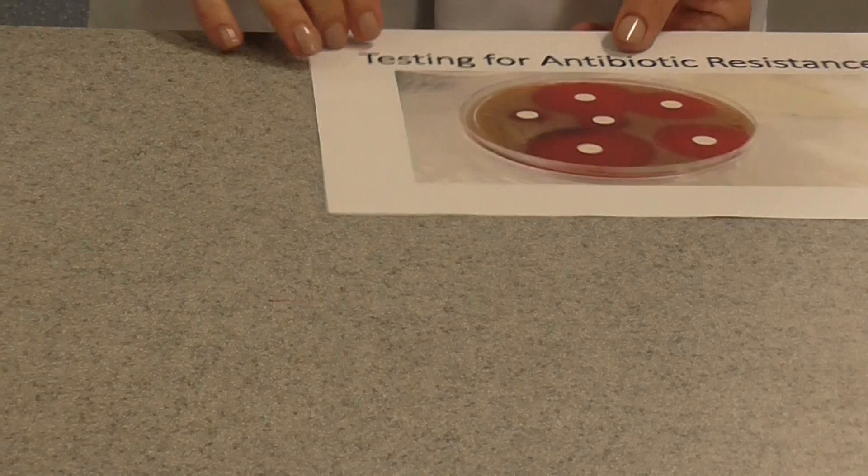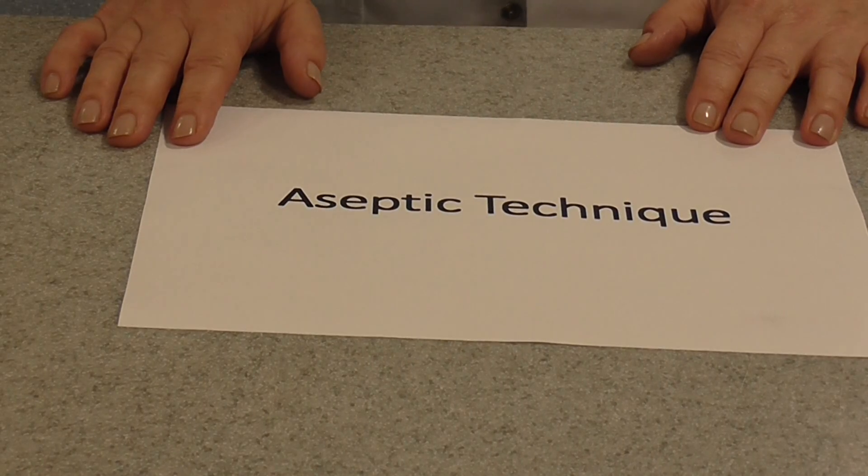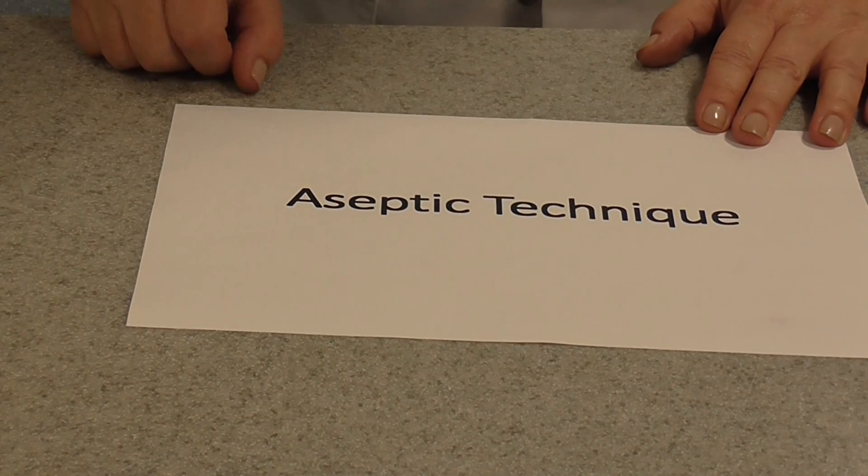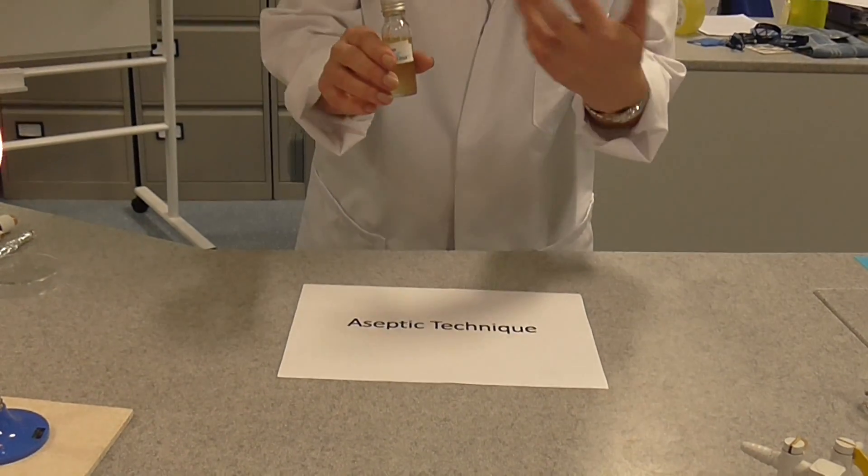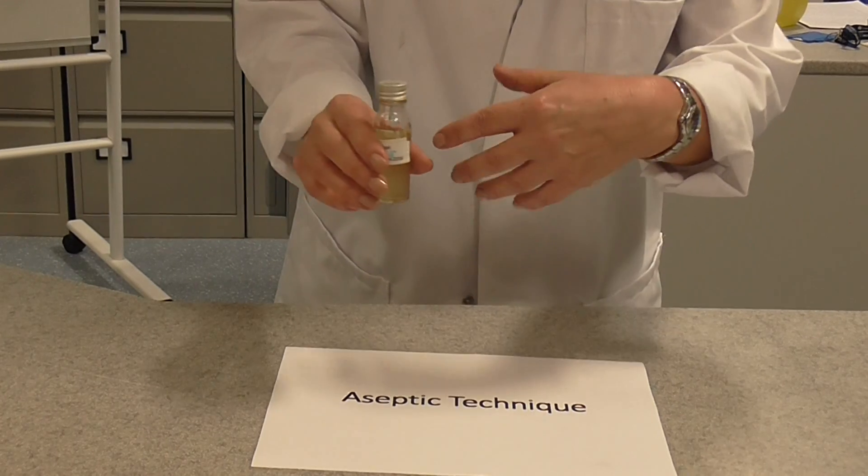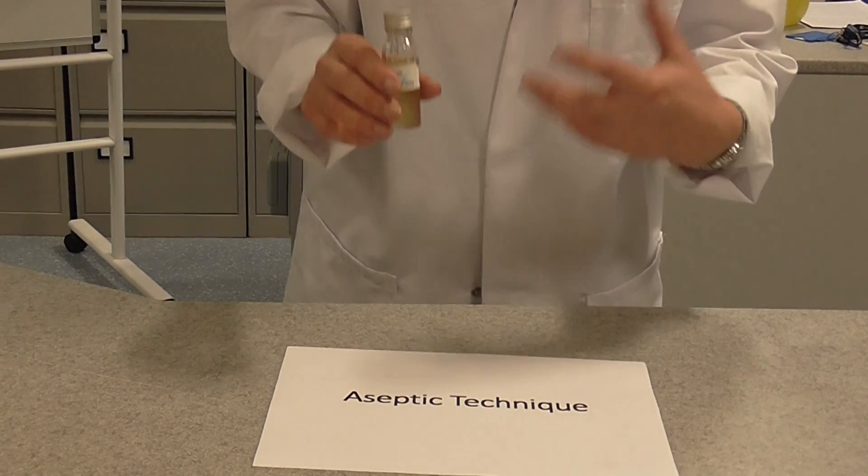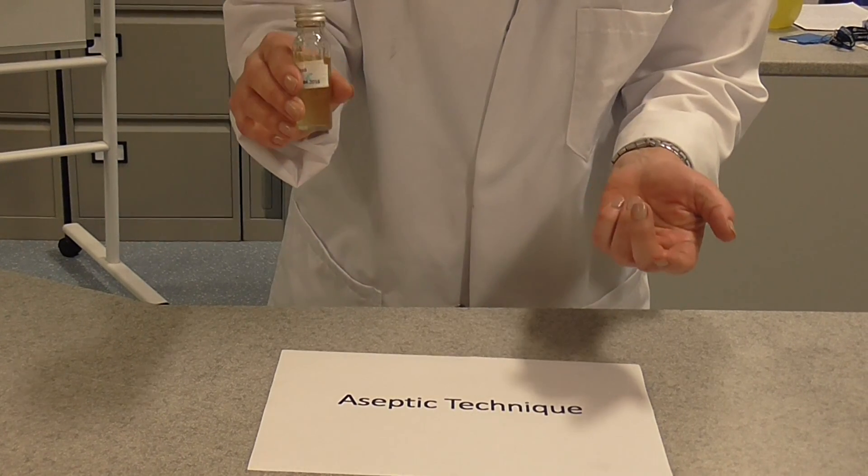Because we're working with live bacteria throughout this practical, we have to use what's known as aseptic technique. These are techniques that we use to prevent our culture from becoming contaminated with bacteria from the lab, but also to prevent contamination of the lab and myself with bacteria from the culture, which could potentially be quite dangerous.